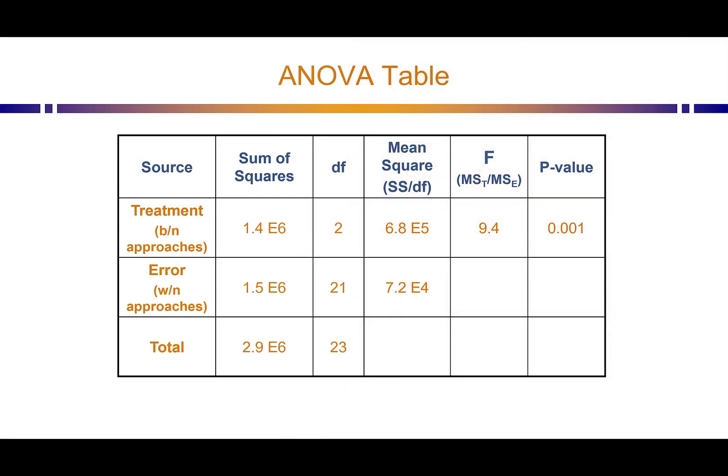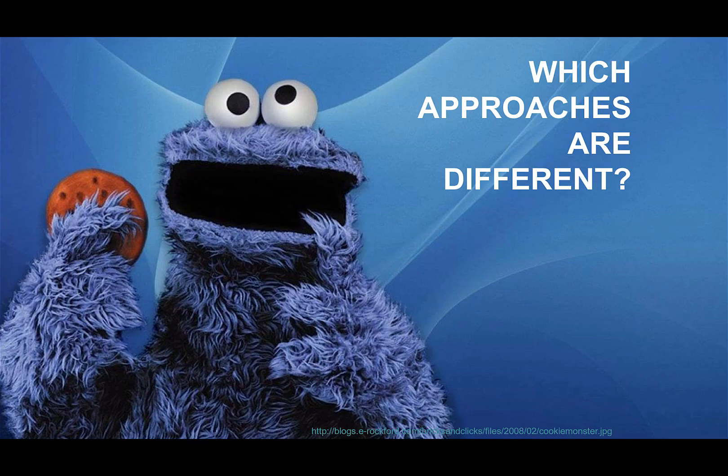We ran the Analysis of Variance, and you've seen all about this table in prior videos. The p-value is tiny, so from here we can reject the null hypothesis that the different fundraising approaches are equal. But where we were left off is, how do we know which ones are different from the others? This is where we have our good friend coming back to help us figure that out — which approaches are different, because we know at least one of these things is not like the other ones.